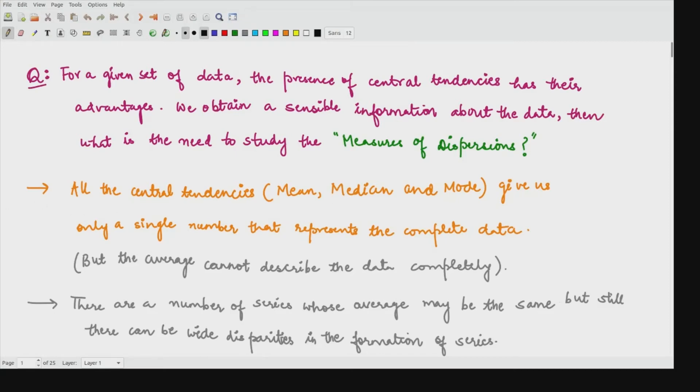Today we shall be discussing the measures of dispersion. Previously we have studied measures of central tendency. What were those? They were mean, median, and mode. And today we will discuss about these measures of dispersion.